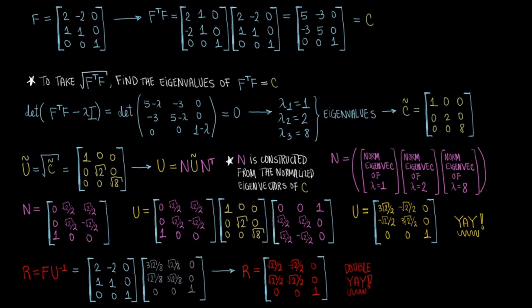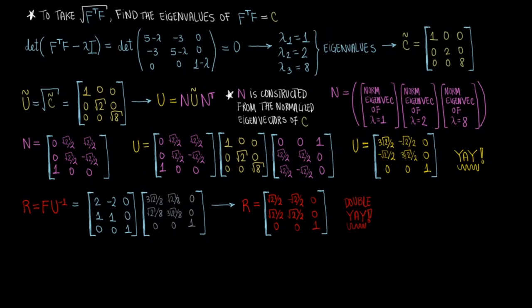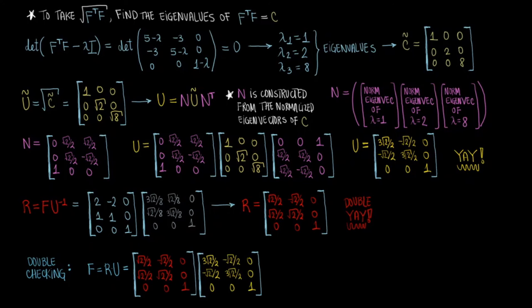Just as a sanity check, we can always multiply the rotation tensor R by the stretch tensor U to make sure that we do get our original deformation gradient tensor F. You can test for yourself at home too. I did this one over here, and it worked out just fine, which is pretty cool. I hope that this has been helpful to you in your adventures exploring biomechanics. Good luck on your studies, and I will see you next time.